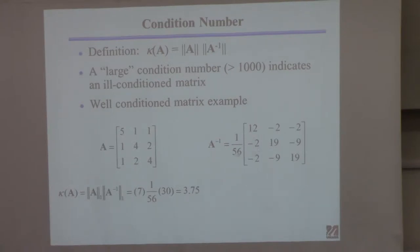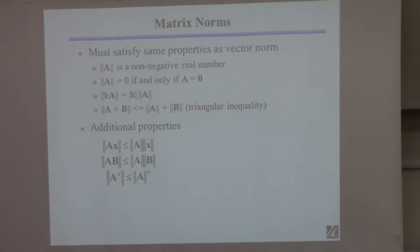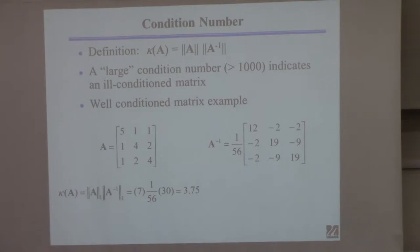Here's the inverse. I can pull the 1/56 out — that's the property of a norm: if you have a constant times A and want to take the norm, you can take the constant out and then take the norm of A. Now I do the column sum norm of what's left. The columns give 16 and 30, so the norm is 30. Multiplying those three things together gives exactly 3.75 — a really well-conditioned matrix. The lowest this number can be is 1, the highest is infinity, and 3.75 is extremely well-conditioned.